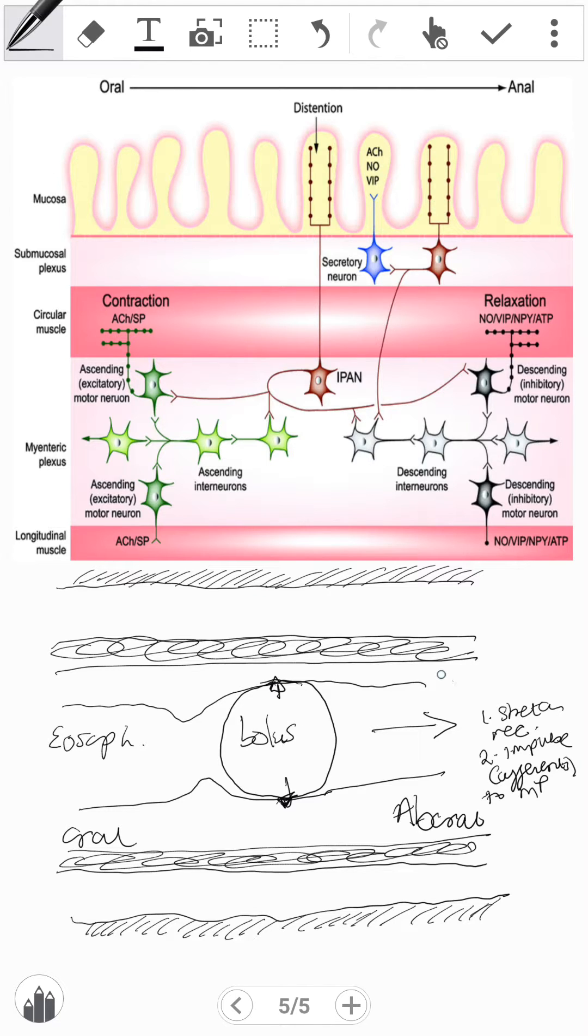So what we have here, just to introduce you to the diagram, is we have a bolus. Here we have the submucosal plexus, and there we have the circular muscle. And here we have the myenteric plexus, and there we have the longitudinal muscle.